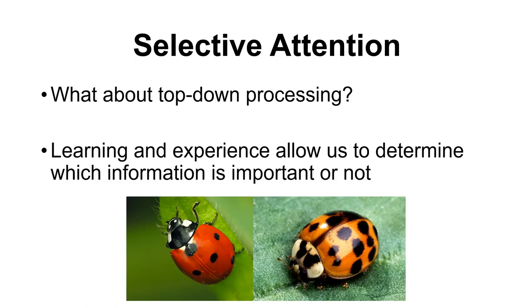But what about the top-down process? This is when we bring in our learning and experience to help determine what information we should or should not pay attention to. The textbook uses the example of a beetle versus a ladybug — they look fairly similar with reddish coloring and spots, but one bites really hard and the other is completely harmless. Once you've had it pointed out to you, you might realize their faces are very different and stay pretty constant, and so you learn from experience which one will bite and which one will not.